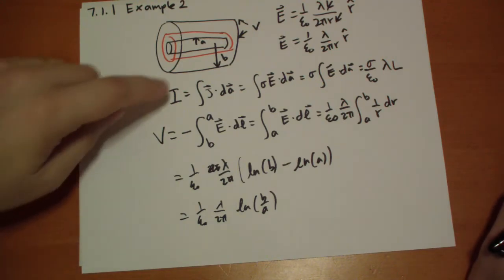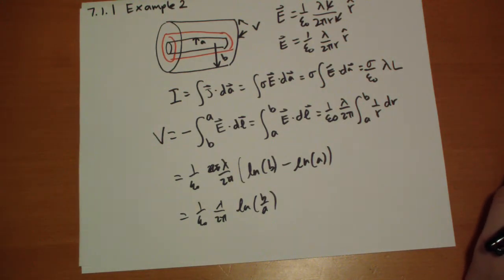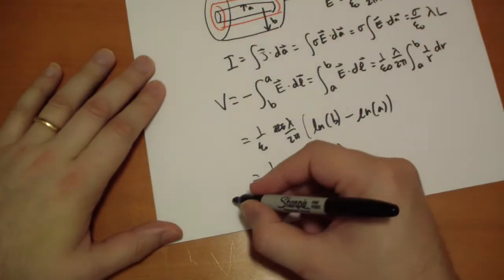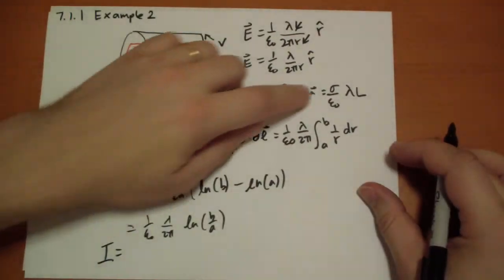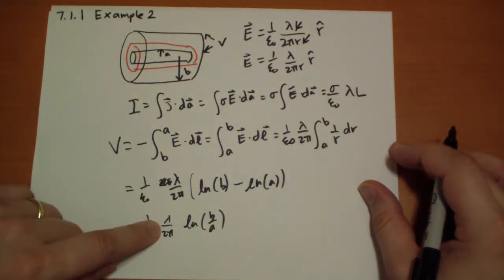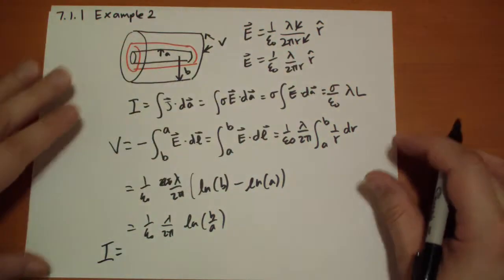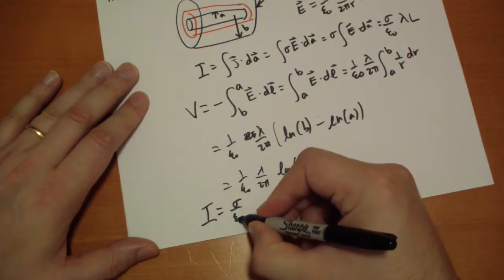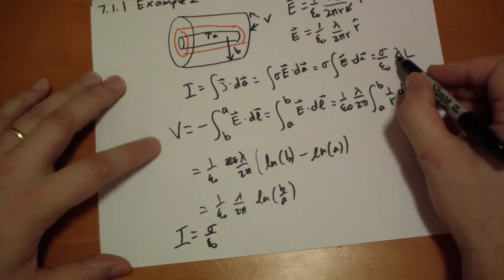The last step is we have to relate V to I. So the current is going to be this. Well, we have a lambda here. So let's solve for lambda. So it's going to be sigma over epsilon naught, lambda, which is...